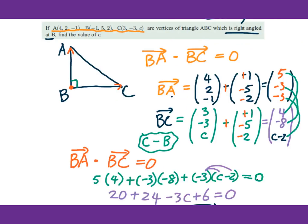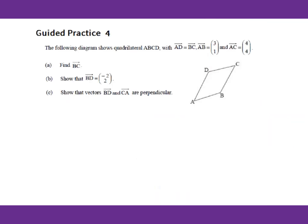Remember, when you want to use the dot product formula — vector multiply equals 0 — make sure that the vectors are placed tail to tail.